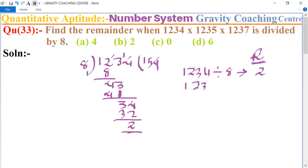...divided by 8, we get remainder as 3. And if 1237 is divided by 8, we get 5 as a remainder. So now we multiply all the remainders.